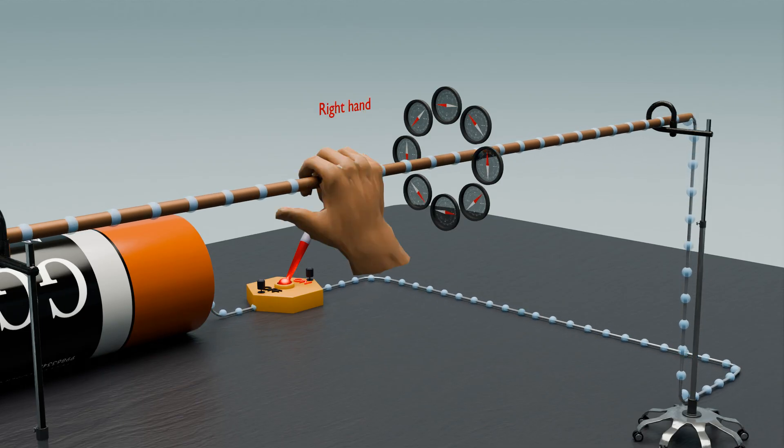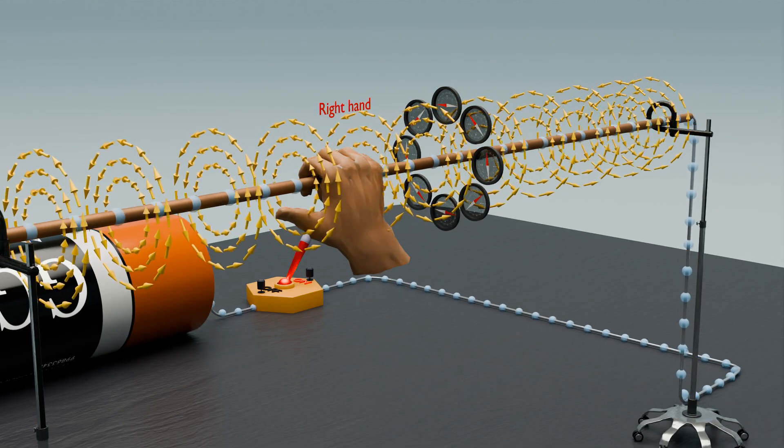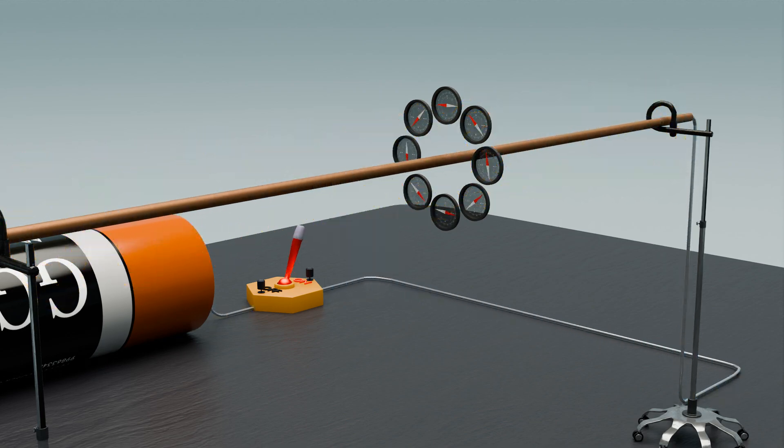As the current flows through the copper wire, it generates a magnetic field that forms concentric circles around the wire. This field can be visualized using compasses placed at different points around the wire.